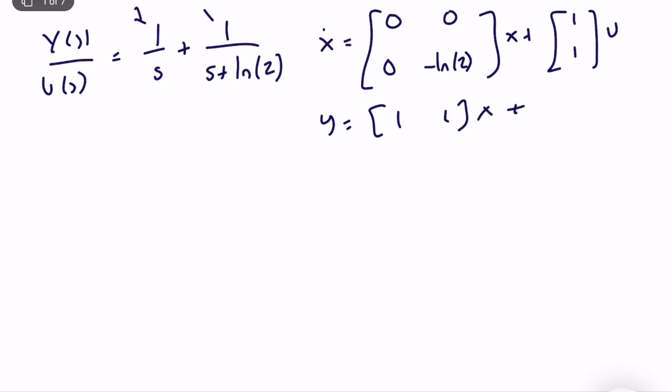I will put the coefficients 1, 1 times x. As you can see there is no direct connection between input and output. The D matrix is equal to zero. So we solved our first problem, or first part.